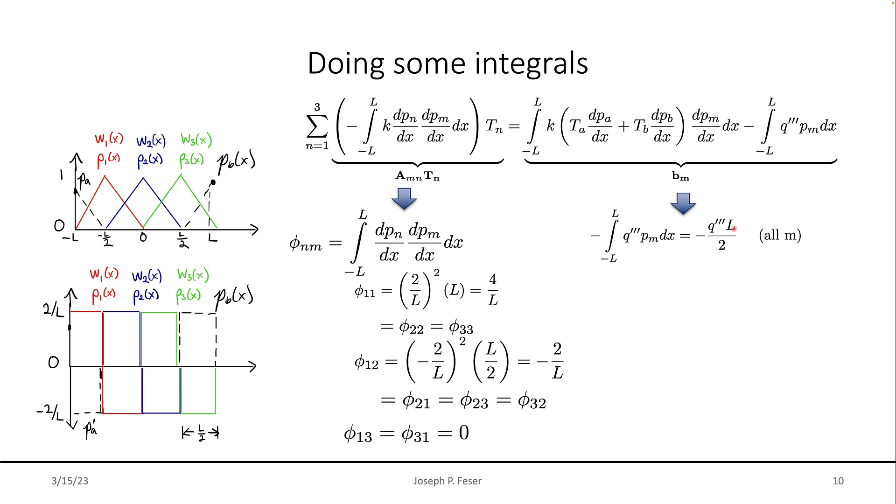So the area under a tent function turns out to be L divided by two. And so if you include the minus sign that's supposed to come with it, that's minus Q triple prime L over two. The other integral that has to be done here, for example, the one that involves TA.